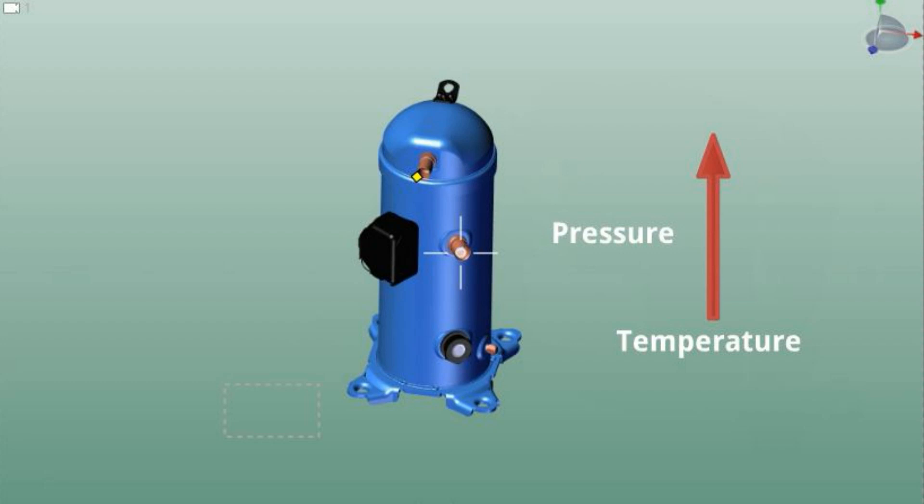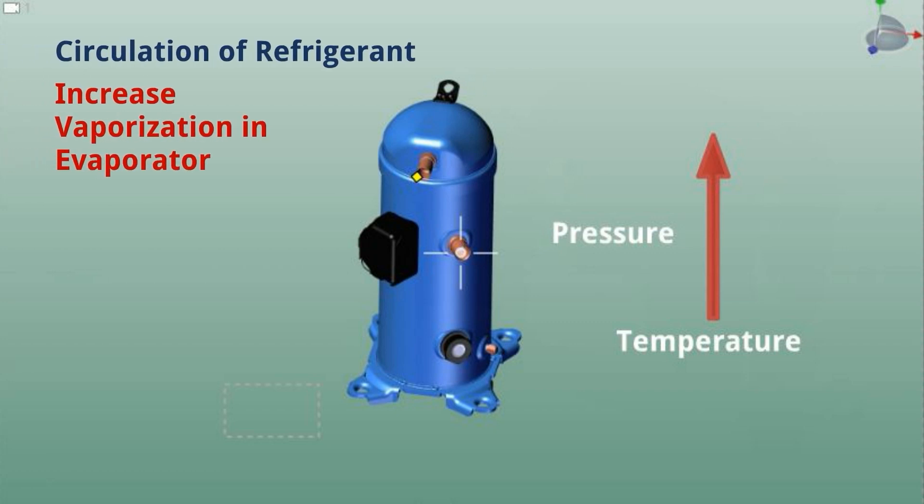What is the main function of the compressor in refrigeration cycle? Main functions are circulation of refrigerant, increase vaporization in evaporator, and help with heat rejection.